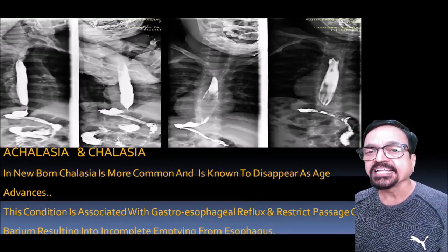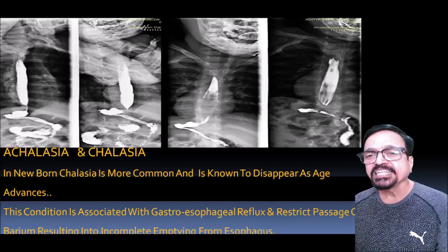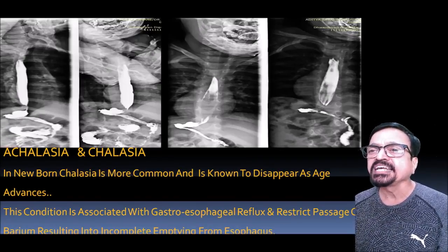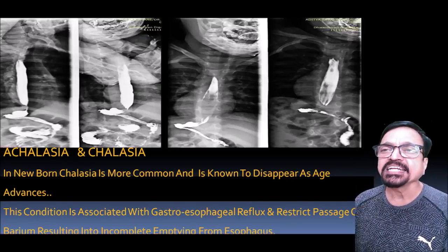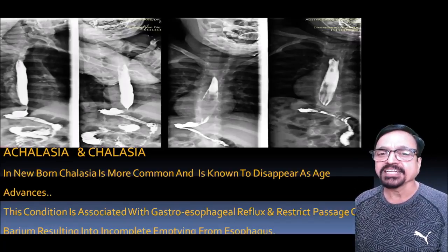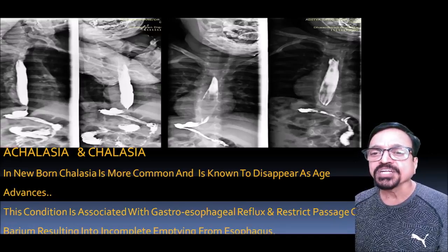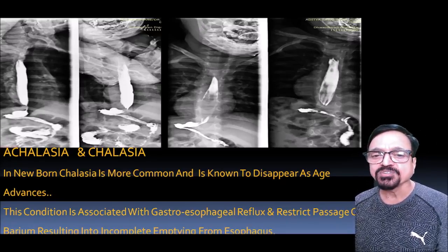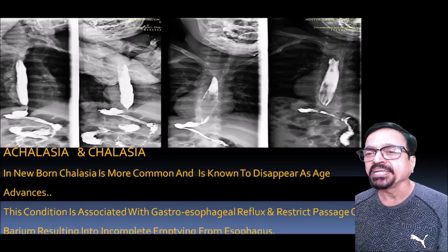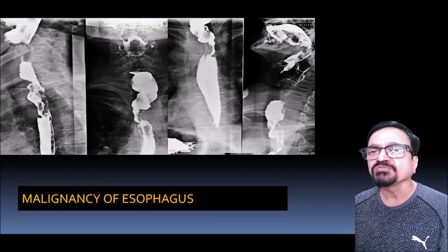There are two entities: chalasia and achalasia. Chalasia is more common in neonates and is known to disappear as age advances — it can be considered a physiological finding. Chalasia is associated with gastroesophageal reflux and restricted passage of barium resulting in incomplete emptying, appearing as regurgitation in a child.